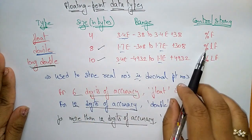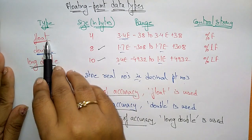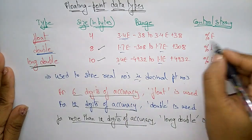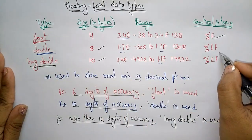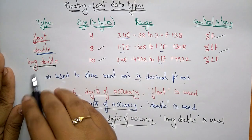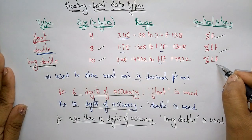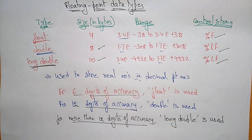The control strings used for floating point data types are: for float, we use %f. For double, we use %lf. And for long double, we use %Lf (capital L). So these are the different floating point data types used in programs: float, double, and long double.